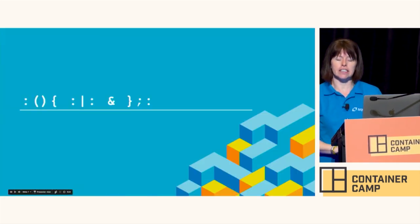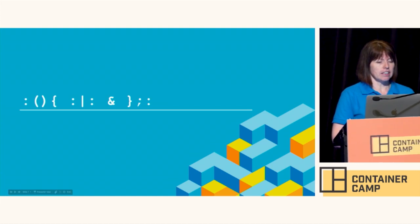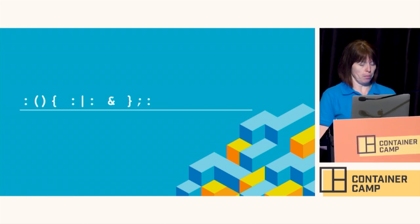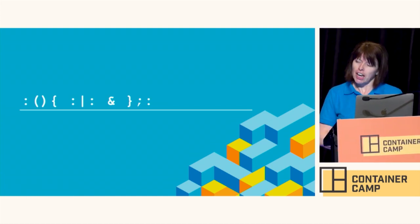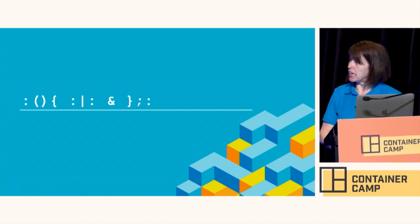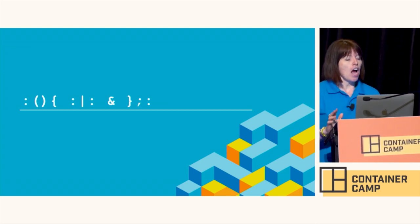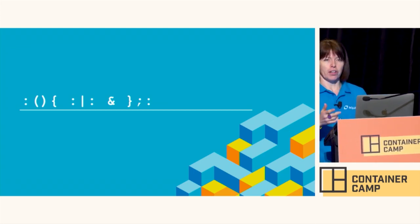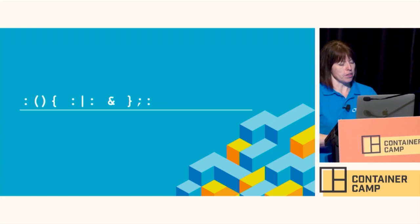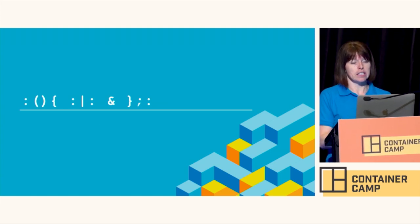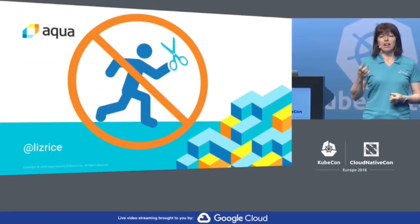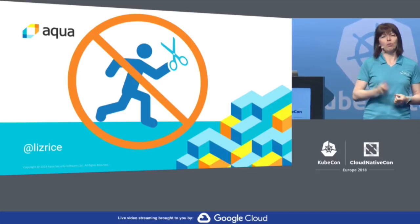So you may have seen these — this is a fork bomb. And we're going to check that my container actually is constrained, fingers crossed, touch wood, by setting one of these off inside my container. Are you letting people run with a sharp object in their hand?